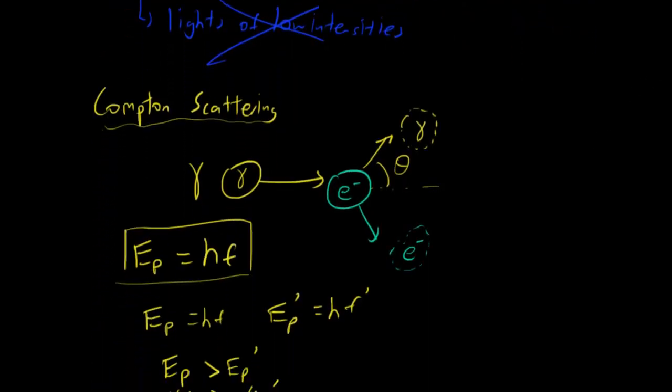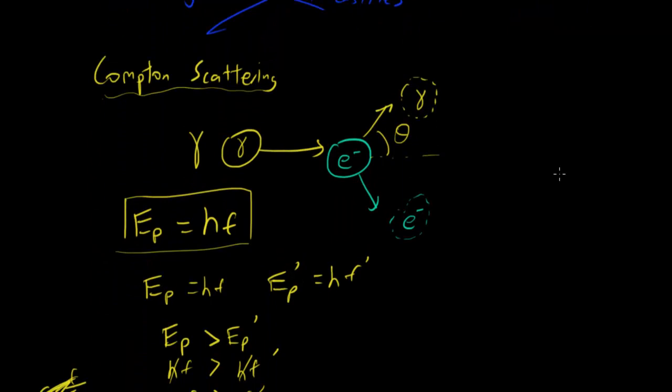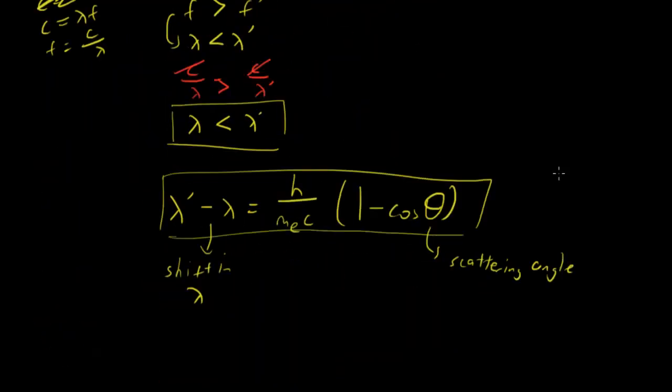Once again we can see that the particle nature of light prevails over the wave theory. Einstein was right, Max Planck was right, and quantum theory was right, because Compton proved it through his postulate that light behaves as particles. Hopefully you can see how light behaves as particles over the past few episodes. If you'd like to see how the Compton equation is derived, I'll probably create a new video and link it below. Until next time, guys — peace out!